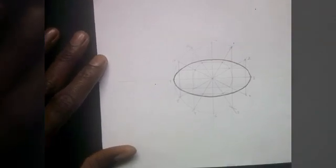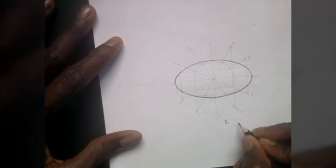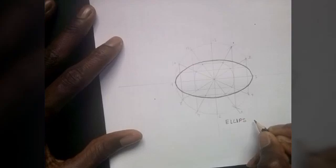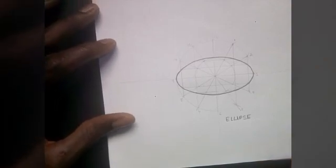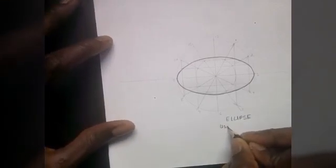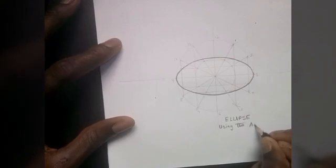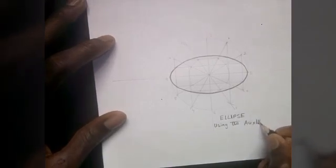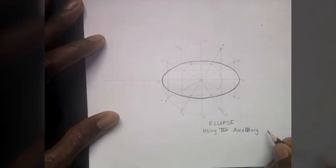As you can see, I'm done drawing an ellipse. This is an ellipse. I'm using the concentric circles method.